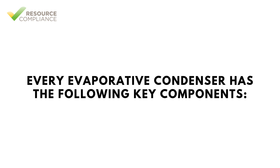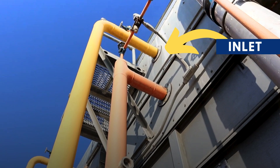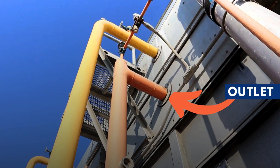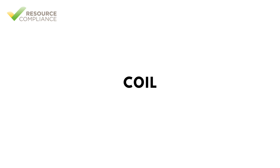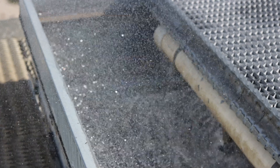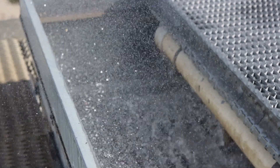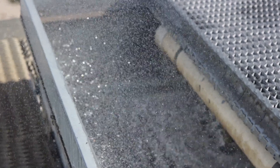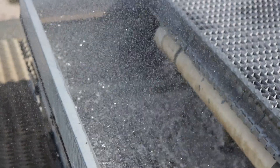Every evaporative condenser has the following key components. Each condenser will have at least one inlet connection to receive superheated vapor and one outlet connection where liquid exits the condenser. The refrigerant flows through a series of heat exchange coils made of durable materials like galvanized or stainless steel. These coils provide the necessary surface area for effective heat transfer. Water is sprayed or distributed over the exterior of the heat exchange coils, which enhances heat transfer and facilitates evaporative cooling.